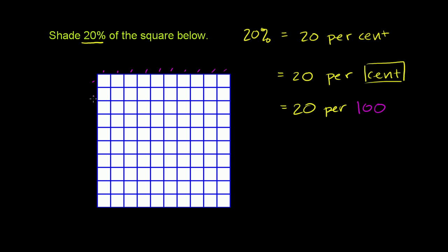If we go vertically, we have 1, 2, 3, 4, 5, 6, 7, 8, 9, 10. So this is a 10 by 10 square, so it has 100 squares here.